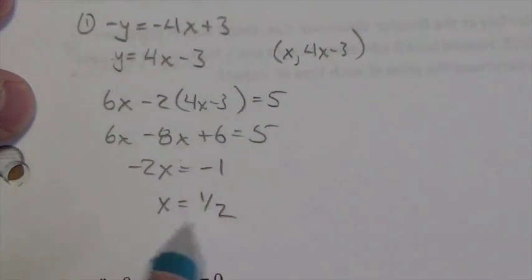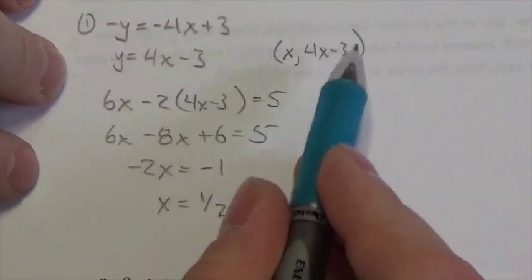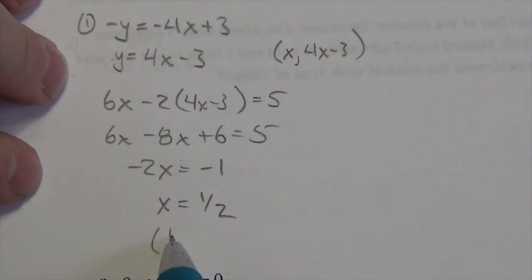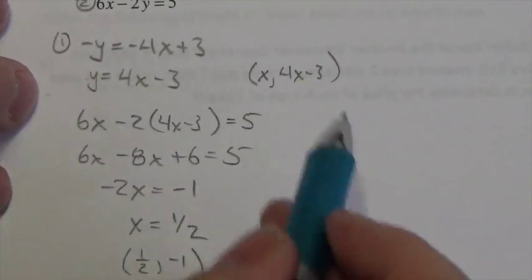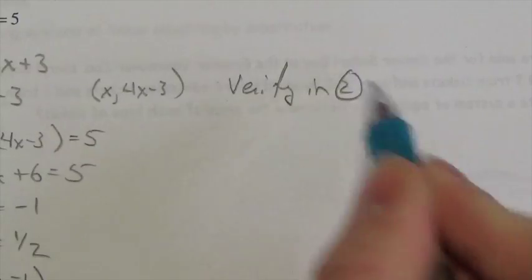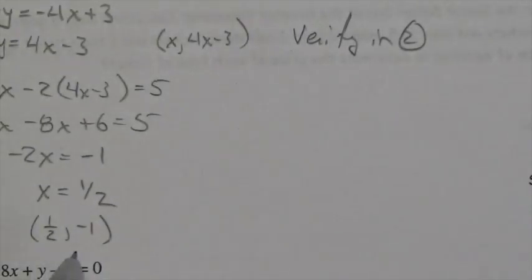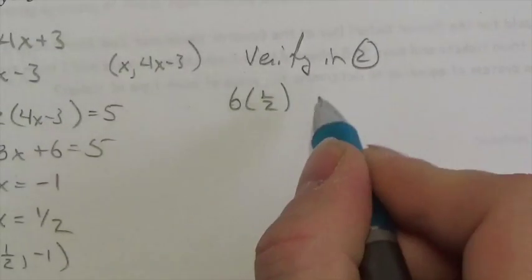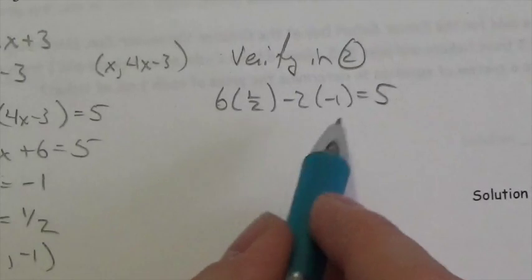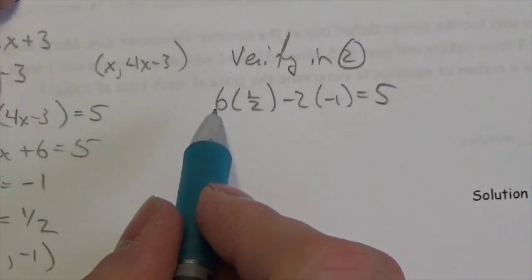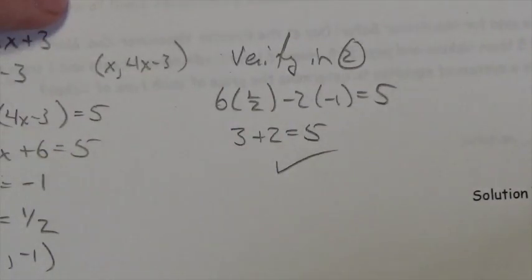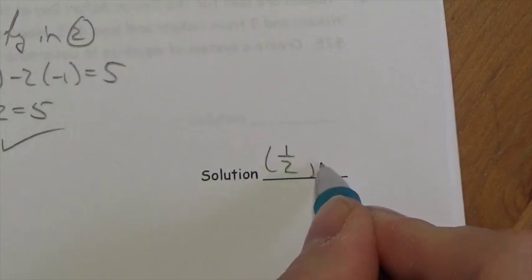I got a fraction — not a big deal. If I plug one-half back into equation one: 4 times a half is 2, minus 3 is negative 1. So the point is (1/2, -1). I used equation one to get that y-coordinate, so I verify in equation two. Six times one-half minus 2 times negative 1 equals 5. Six times a half is 3; negative 2 times negative 1 is positive 2. Does 3 plus 2 equal 5? Yes. So the solution is the point (1/2, -1).